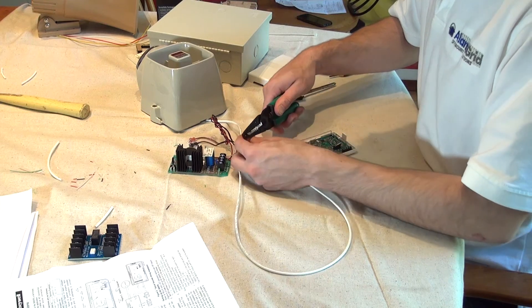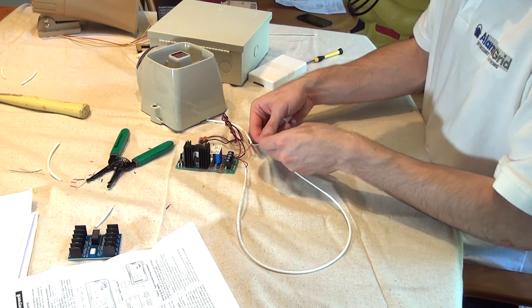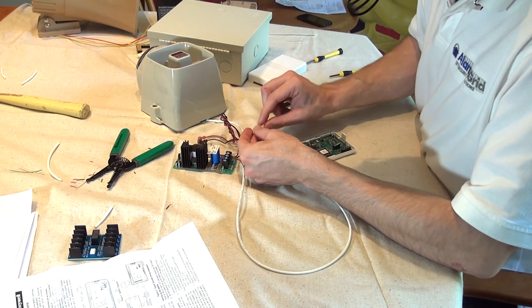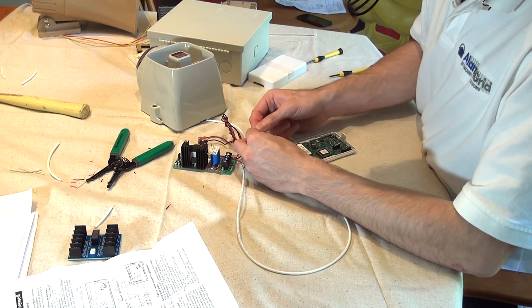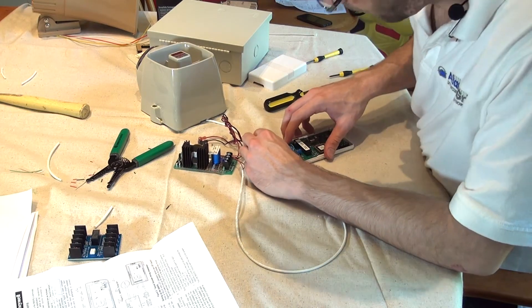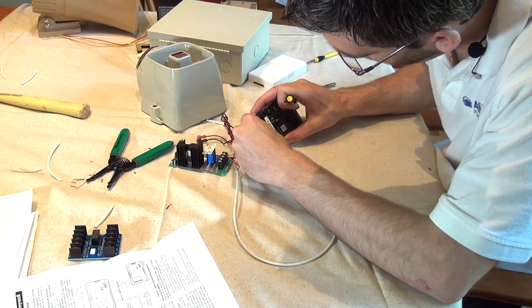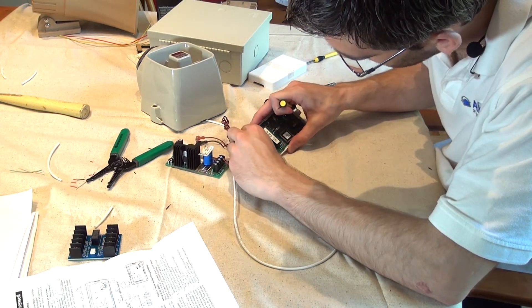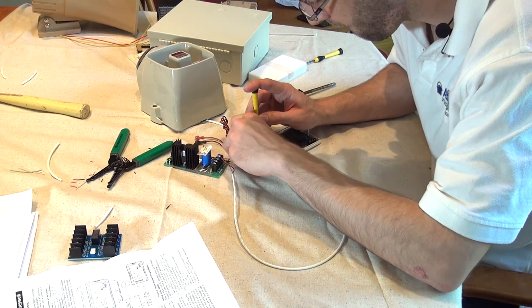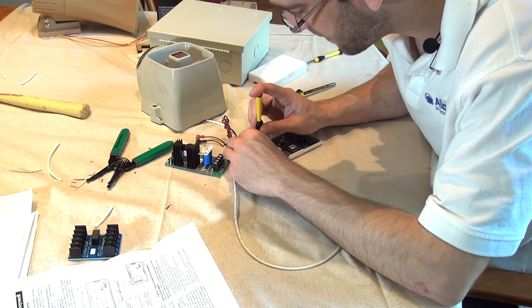We're going to take our two negatives from the siren and the strobe, twist those together, and these are going to get landed to terminal number three on our relay, which is directly underneath the jumper wire connection that we did previously. So we open up the screw terminal, we insert both wires for the siren and the strobe, and we screw it down nice and tight.